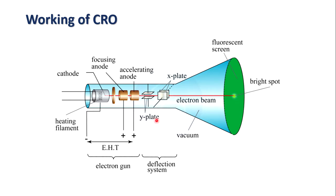Now, this x-plate — if we apply a voltage to the x-plate, then this bright spot, the electron beam, will be deflected horizontally along the x-axis. That is why, as it deflects the beam along the x-axis, it is known as the x-plate. Similarly, when we apply voltage across the y-plate, it deflects the electron beam along the y-axis, and that is why it is known as the y-plate.